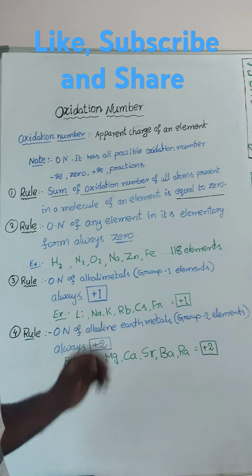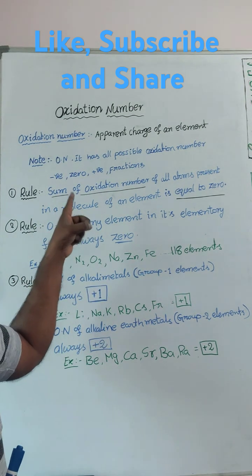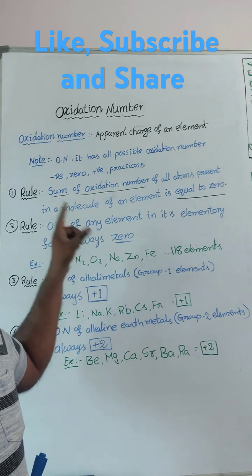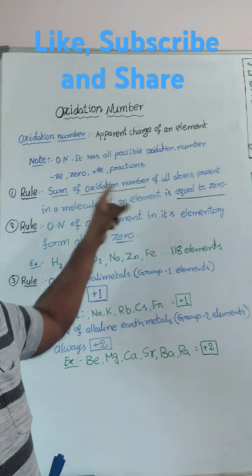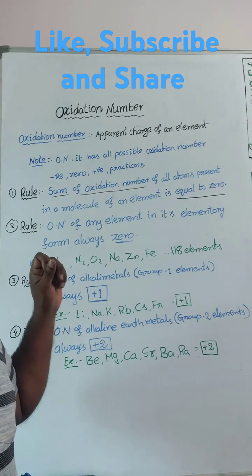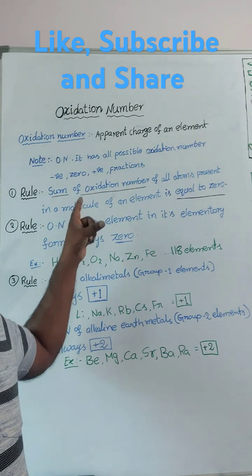So, go through it, you will get it clear. First rule, for all the rules, we are going through the calculation first rule. Sum of oxidation number of all the elements is equal to 0.